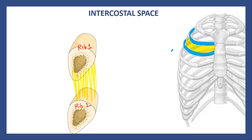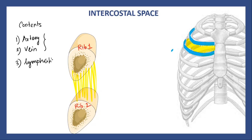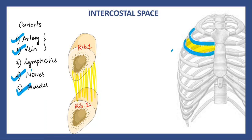Now let us understand what are the contents of the intercostal space. In anatomy, whenever we talk about contents, they are mostly artery, vein — that is vascular structures — sometimes lymphatics are also present, nerves, and finally muscles. These are the common contents of any anatomical space. In the intercostal space we have artery, vein, nerve, and muscle. We don't have any major lymphatics here.